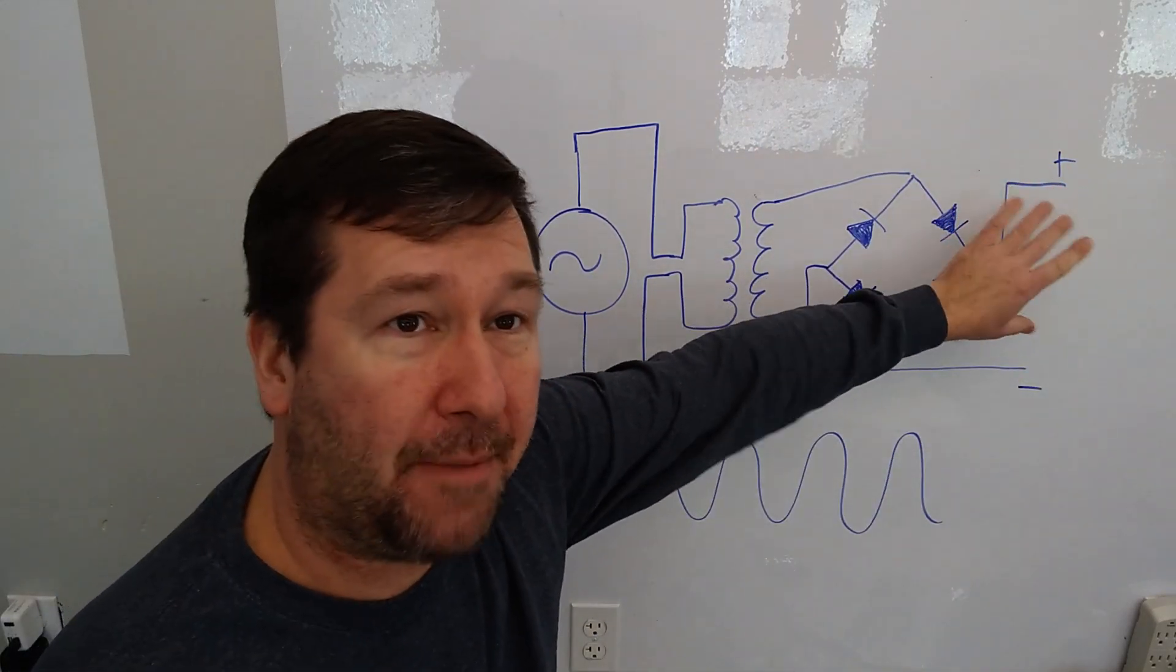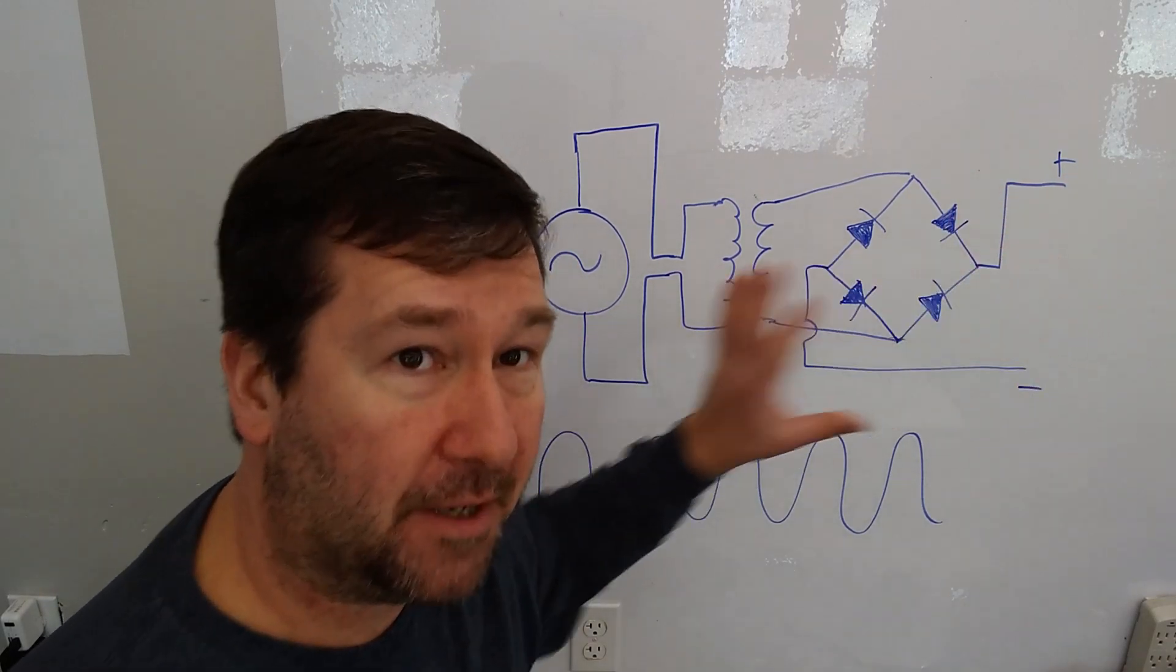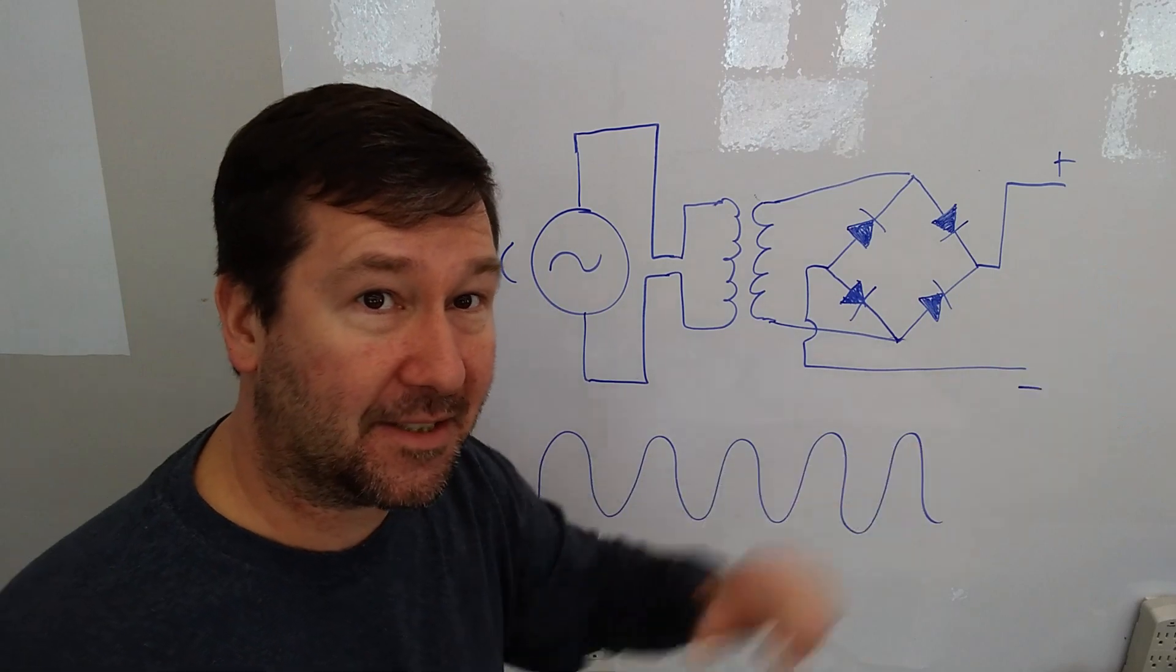Now, there's also some capacitors, voltage regulators, and all other types of line circles and arrows that I should have over here. But this is our basic circuit.